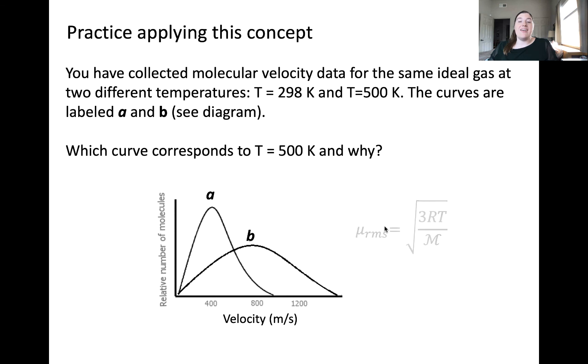And we know that average velocity or root mean squared velocity is directly proportional to temperature. Thus, curve B must correspond to the higher gas temperature sample.